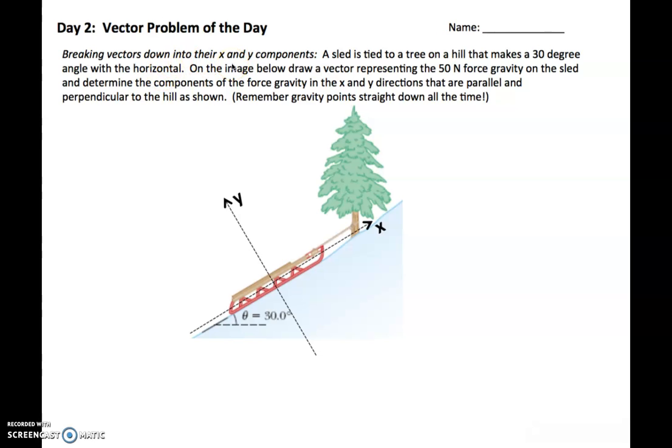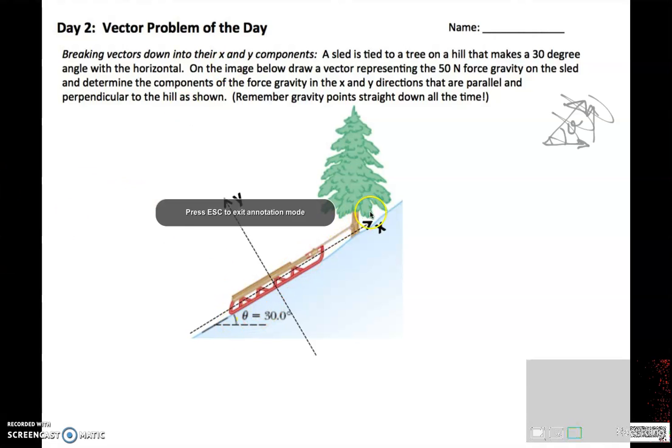So we're going to be breaking a vector down into its x and y components, and you already have done that before with a vector. And this is also essentially the same process, except we're going to be doing something weird. We're going to be shifting our x and y axes to be on this hill. So notice, x and y are still perpendicular to each other, still a right angle here, but I've just, like, rotated my paper. And so what we're doing is we're going to be taking, drawing a vector that represents the 50 newton force of gravity on this sled. Our goal is to determine the x and y directions that are parallel and perpendicular to the hill.